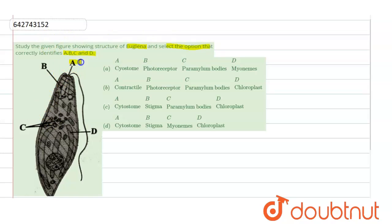We are given the options A, B, C and D and we have these four options. First states cytostome, photoreceptor, paramylum bodies and myonemes. Then is contractile, photoreceptor, paramylum body and chloroplast.